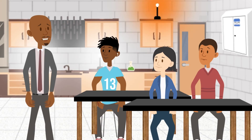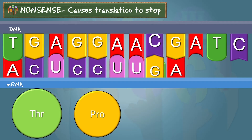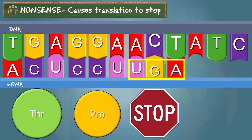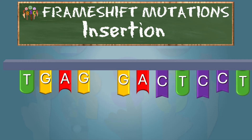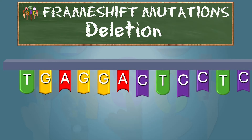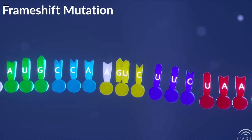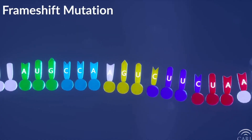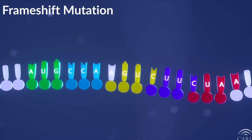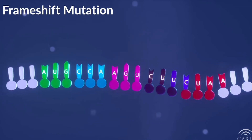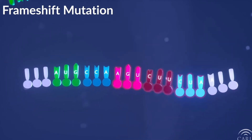Sometimes that one substitution can cause the entire translation protein synthesis process to stop — that's called a nonsense mutation. Insertions and deletions can have a greater effect. They cause the entire reading frame to shift. These are typically very serious outcomes, and they rarely end up silent. These are called frameshift mutations.